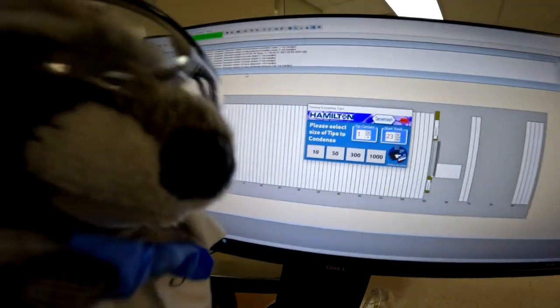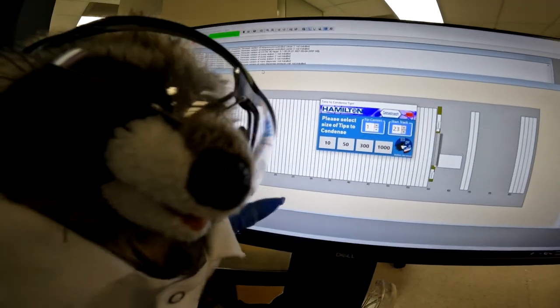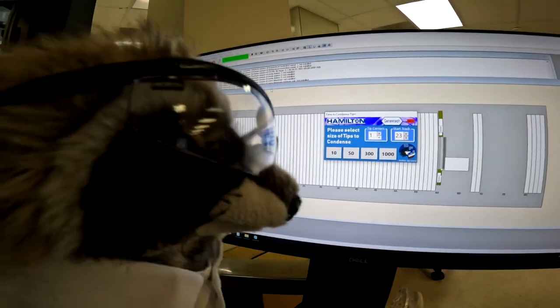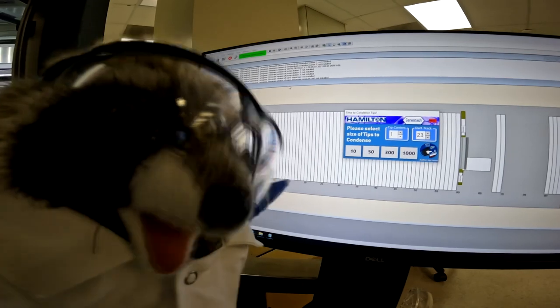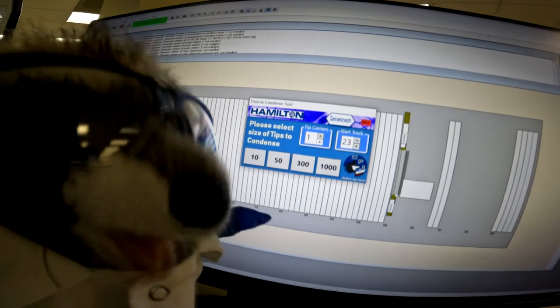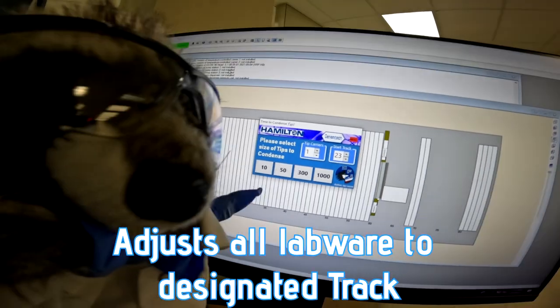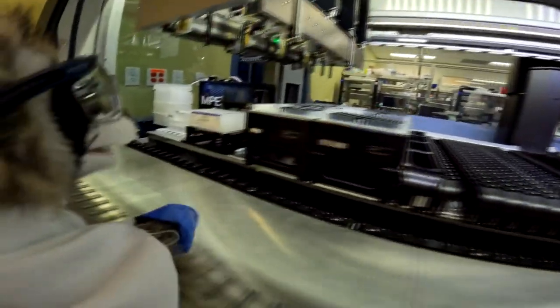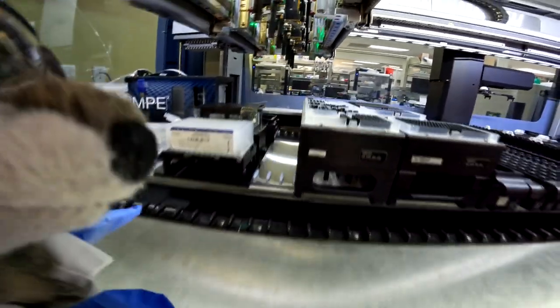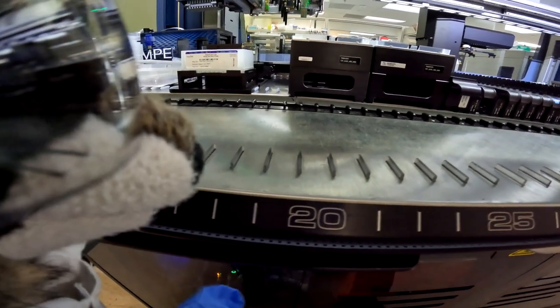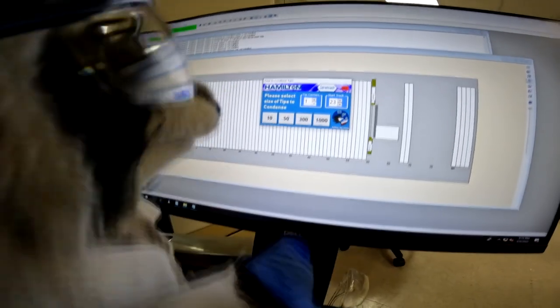All right, so here we have time to condense tips. I will select the number of carriers. We only have one carrier with these 1,000 tips. The dynamic part is the track start. We're going to change this number to track 19 because if you look over here, that first carrier is track 19. Let's change it to 19.